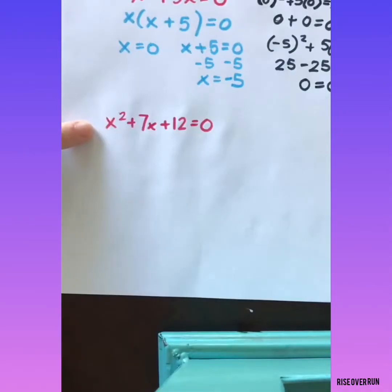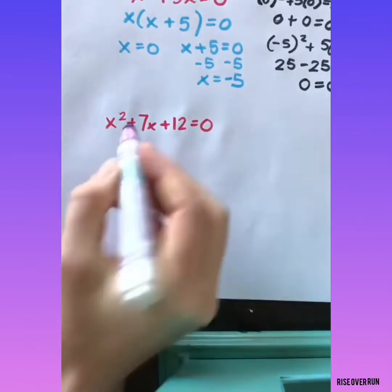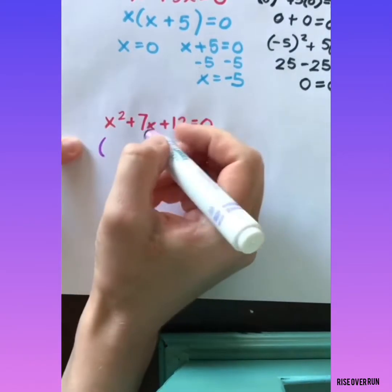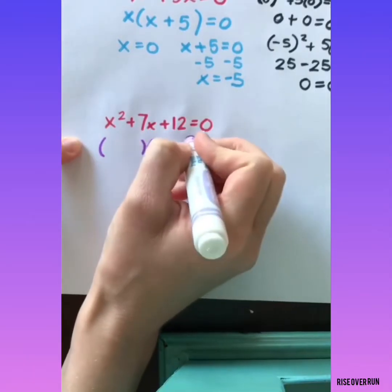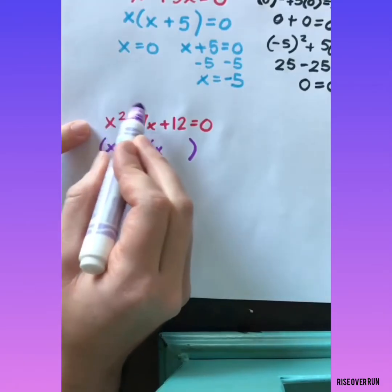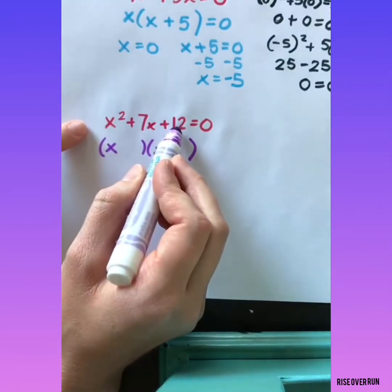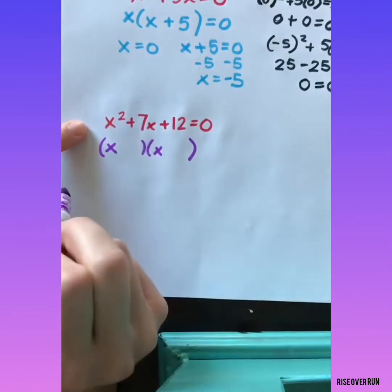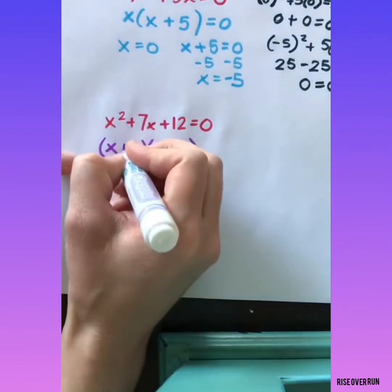Let's solve this quadratic equation. This side is set equal to 0, so let's factor this side, and then we can use the zero product property. Remember, when we factored, we're looking for two numbers that multiply for a product of 12 and add for a sum of 7. 3 and 4 will work.